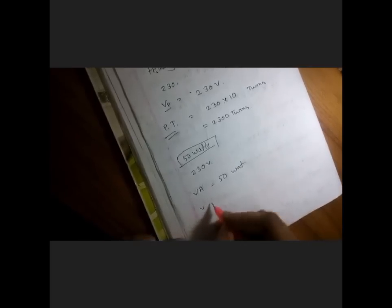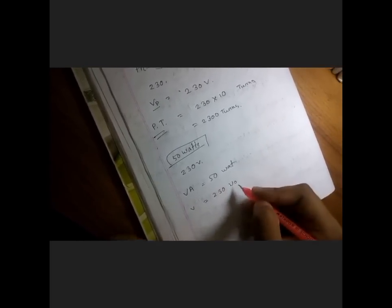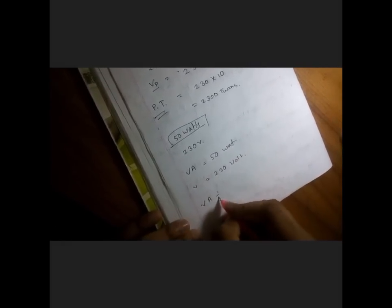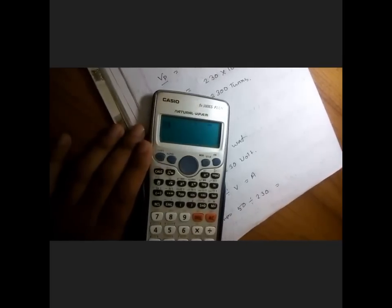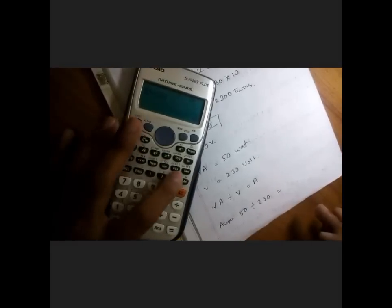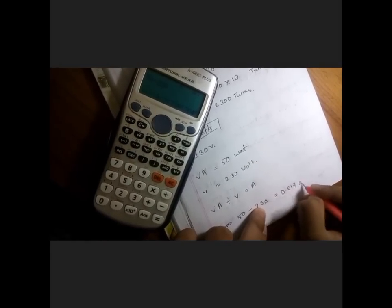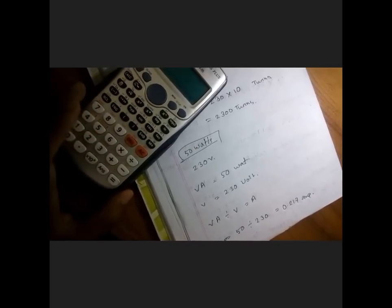And supposing that my transformer is about 50 watt. So if our primary volt is here 230 volt and VA equal to 50 watt and volt equal to 230, so if we calculate the ampere of the primary winding, it will be VA divided by V equal to A. So ampere equal to 50 divided by 230. So let's calculate 50 divided by 230 equal to 0.217 ampere. So the transformer will take 0.217 amps.